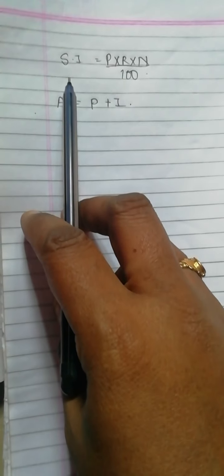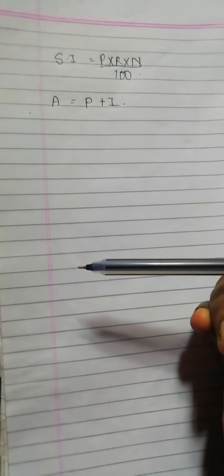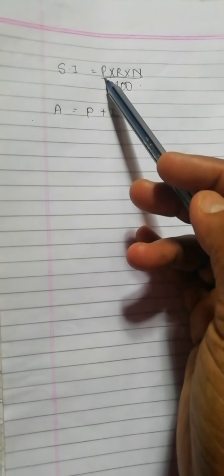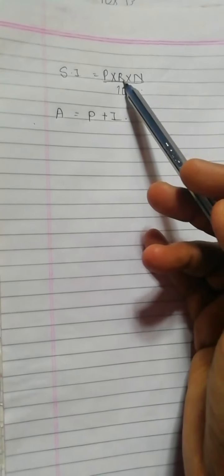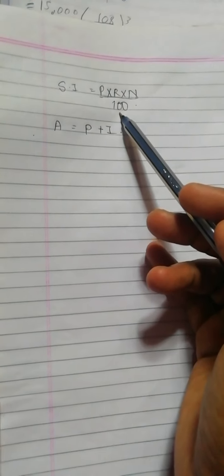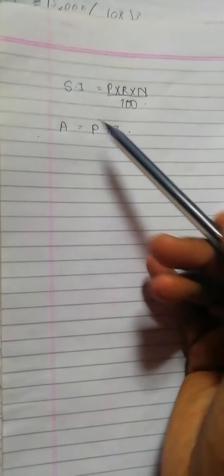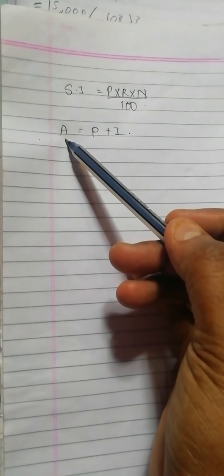Students, in the previous year we learned about simple interest. What is simple interest? Whenever we lend money or take money, we need to pay interest. We calculate that interest as: principal amount multiplied by rate of interest multiplied by number of years, divided by 100. And the total amount is the principal plus the interest.